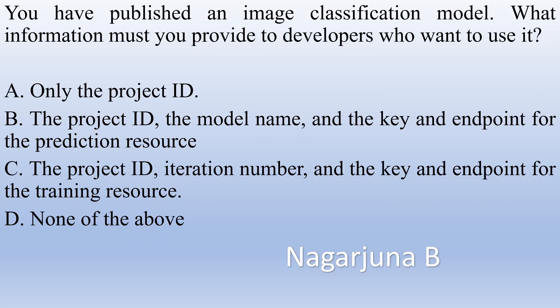You have published an image classification model. What information must you provide to developers who want to use it? Option A: Only the project ID. Option B: Project ID, model name, key, and endpoint for the prediction resource. The right answer is Option B: project ID, model name, key, and endpoint for the prediction resource.